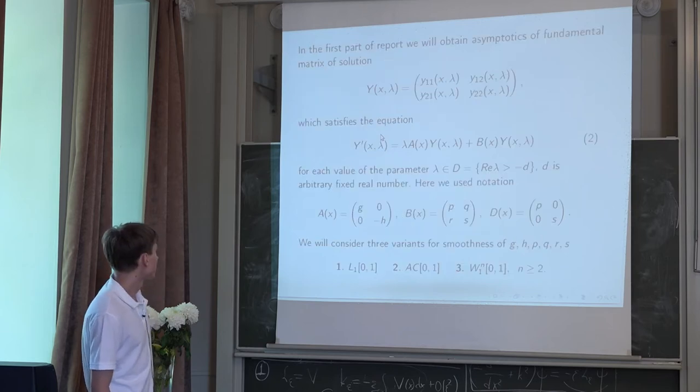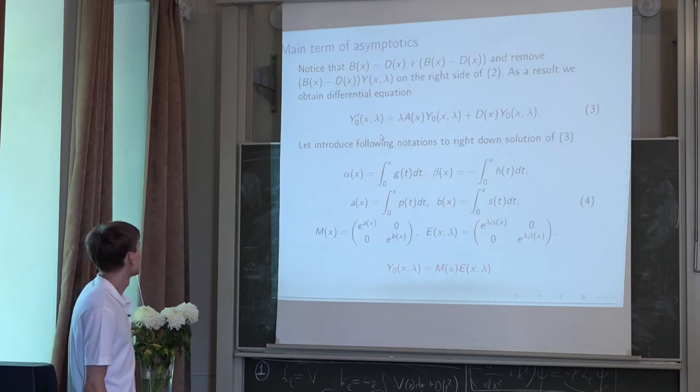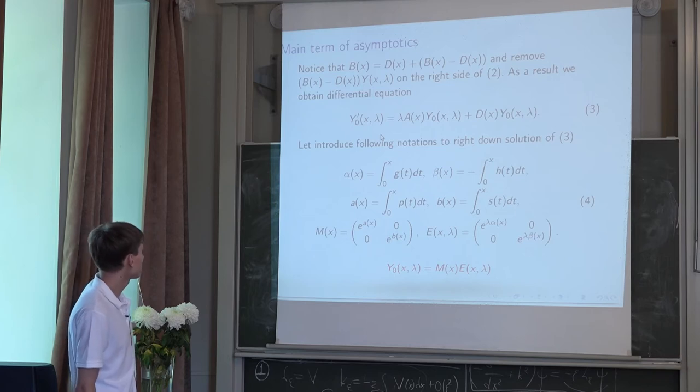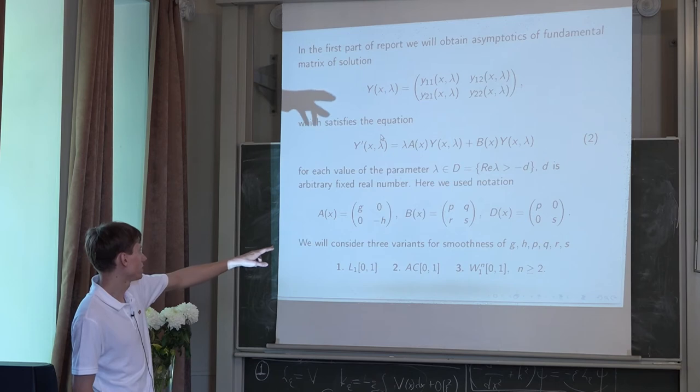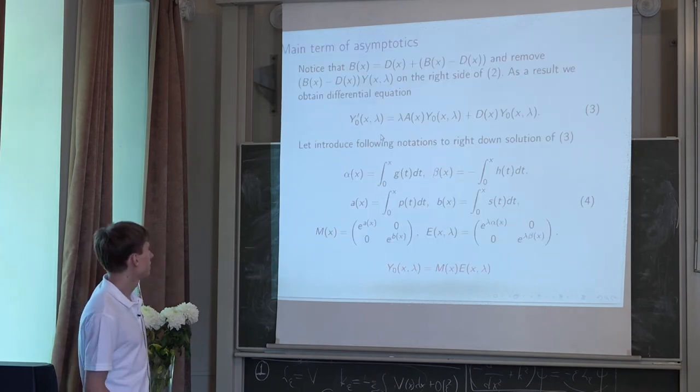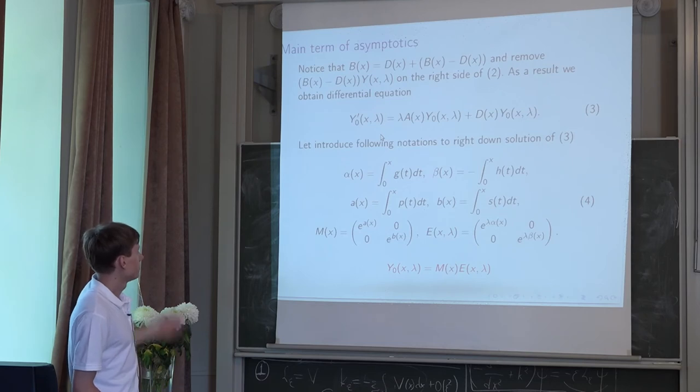Okay. Let's start from the obtaining of main terms of asymptotics. And we start from the case of diagonal matrix B(x), which means d(x). You can see here d(x), it is the diagonal from matrix B(x).